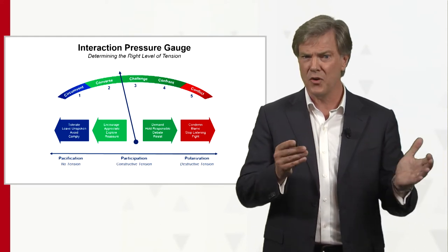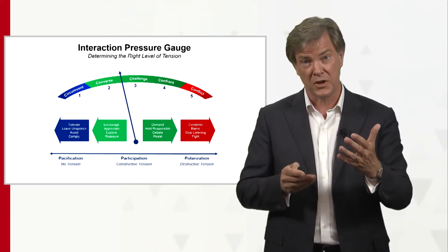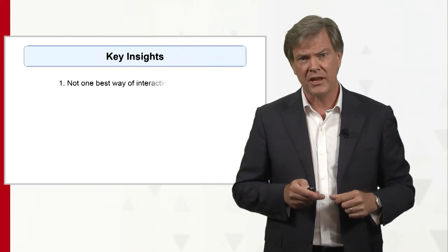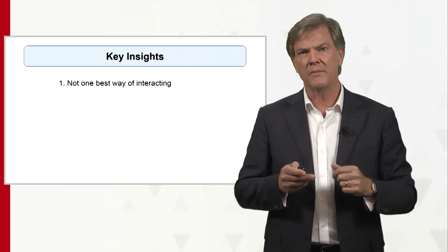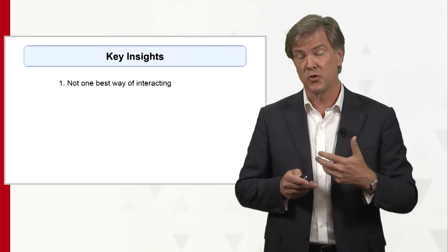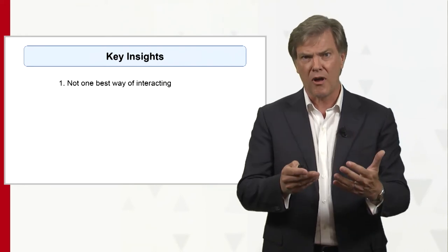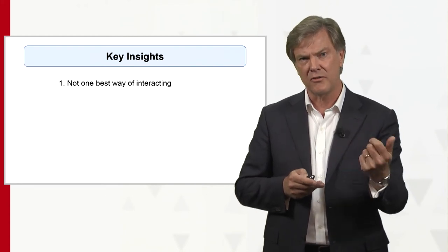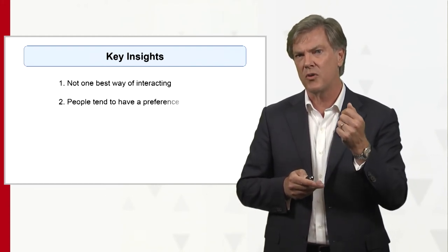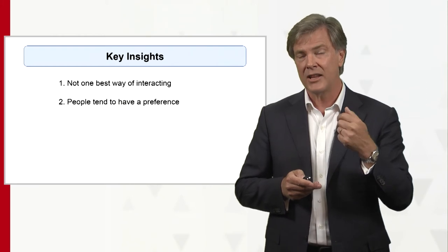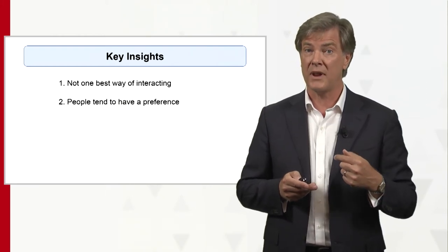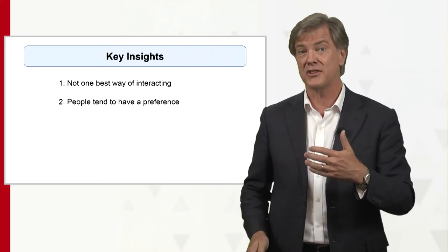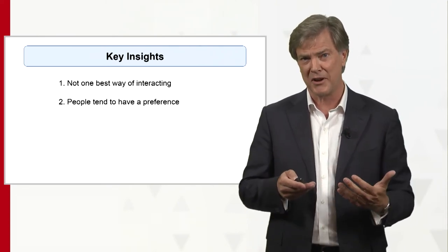So here we have your interaction pressure gauge — what's the right one for you? In terms of key insights, there's not one best way of interacting. Sometimes gurus will tell you to always go into a conversation in a certain way, but this pressure gauge says no — there's not one best way. You need to think about what you want to get out of it. You probably already have your own preference, and you might stick to one side or the other not because it's useful, but because it makes you feel better.